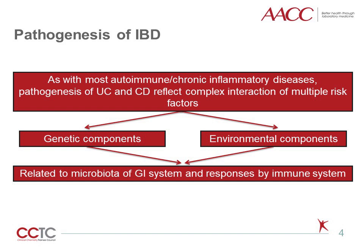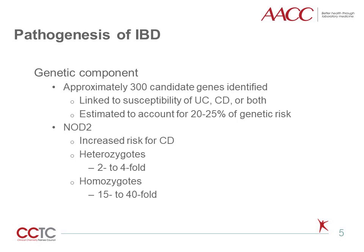The pathogenesis of IBD reflects a complex interaction of multiple risk factors, which is a common characteristic of autoimmune diseases. These risk factors include genetic and environmental components. Both appear to be related to alterations in the GI microbiota and how the immune system responds to these changes. More than 300 genes have been identified that confer some level of risk for ulcerative colitis, Crohn's disease, or both, although this accounts for only about 25% of the overall genetic risk. As a specific example, certain mutations in the NOD2 gene lead to increased risk for Crohn's disease, with heterozygotes showing a 2-4-fold increased risk and homozygotes showing a 15-40-fold increased risk. However, these are only risk factors, and at least a percentage of individuals with NOD2 mutations will never develop Crohn's disease.